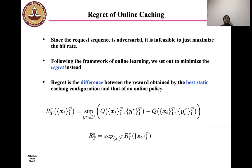Next, we define the regret, the notion of regret. Since the request sequence is adversarial, it is infeasible just to maximize the hit rate because the adversary can choose whatever request sequence it wants. So, at every slot, in principle, it can make any caching algorithm yield zero reward. So, what do we do? Following the framework of online learning, we set out to minimize a regret instead. Regret is the difference between the rewards obtained by the best static caching configuration and that of an online policy.